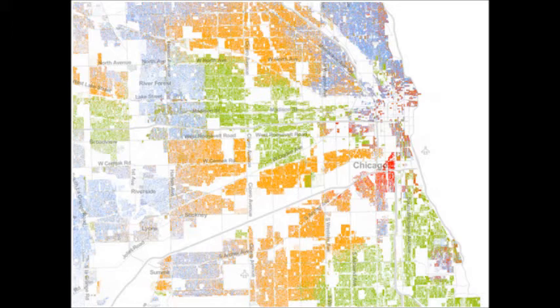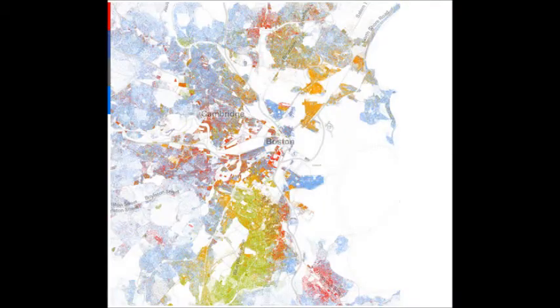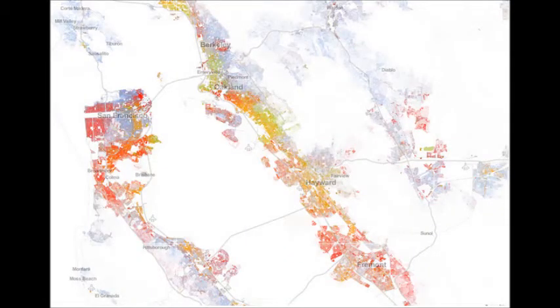For example, Chicago, or Boston, or New York City. Also, the Bay Area is very segregated according to race. Now, this is just the data side.